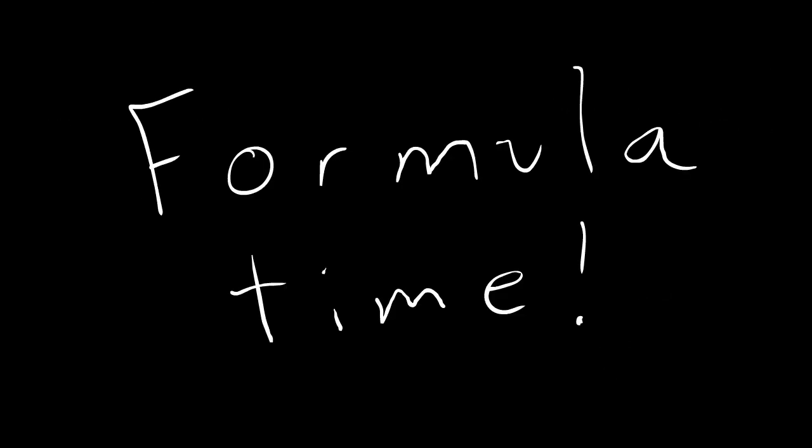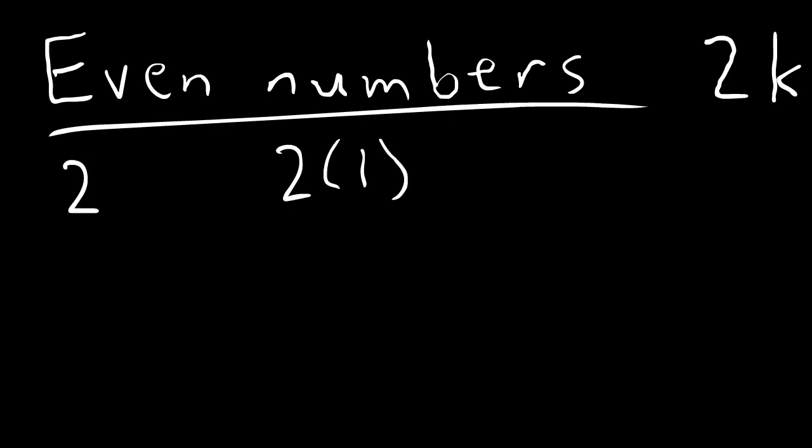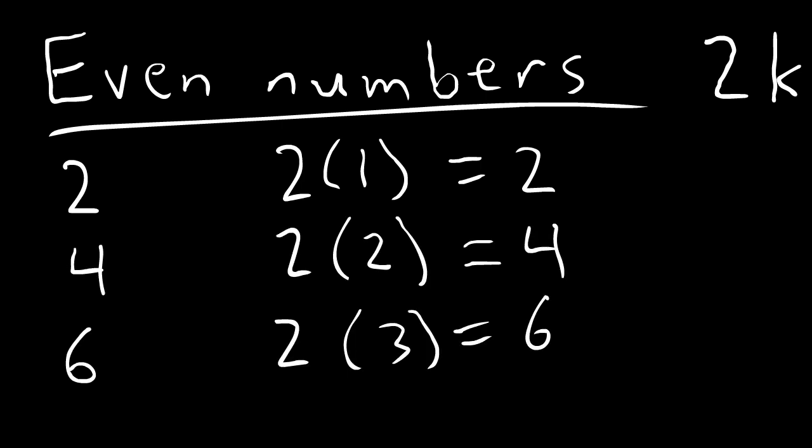To come up with a general formula for generic k, we can note that even numbers can be represented by 2k. The first even number is two, which if you plug in one for k, you get. The second even number is four, which if you plug in two for k, you get, and so on.